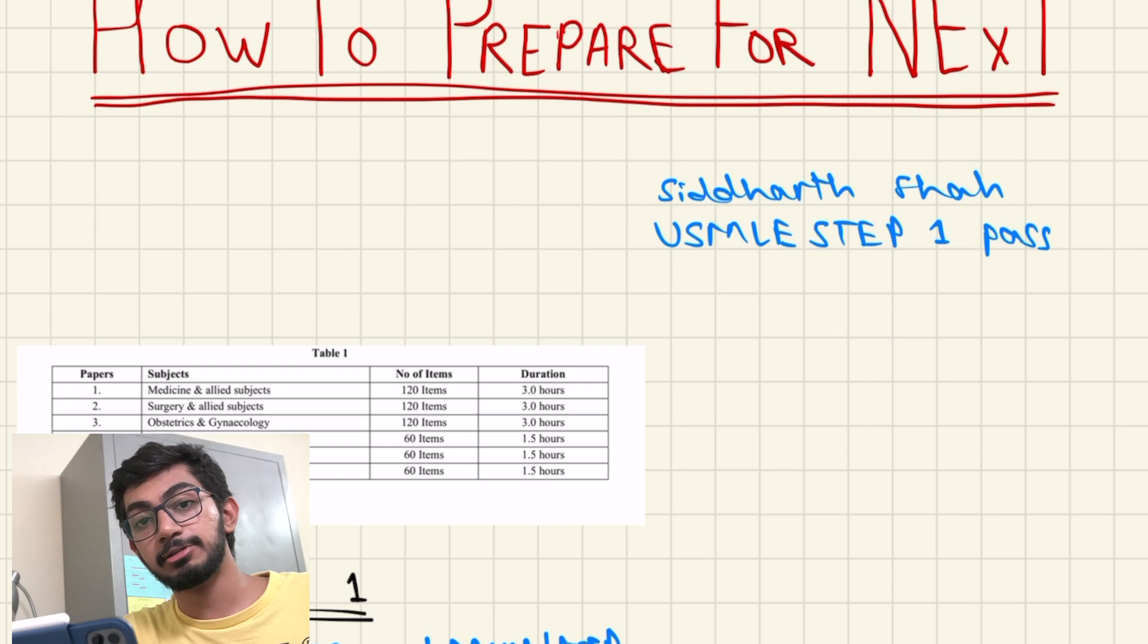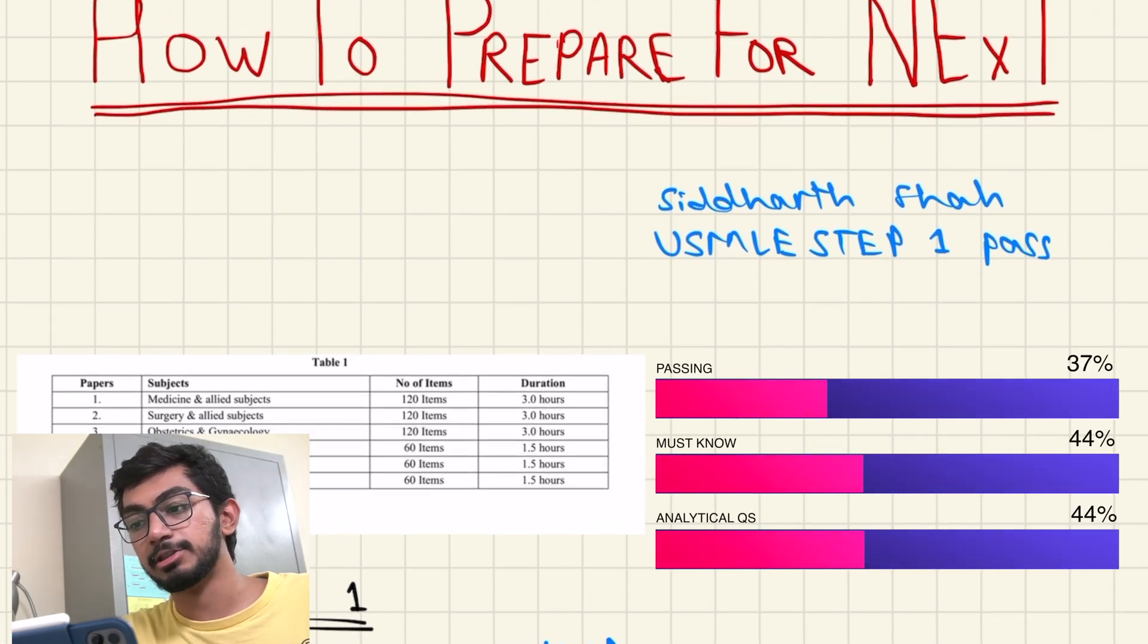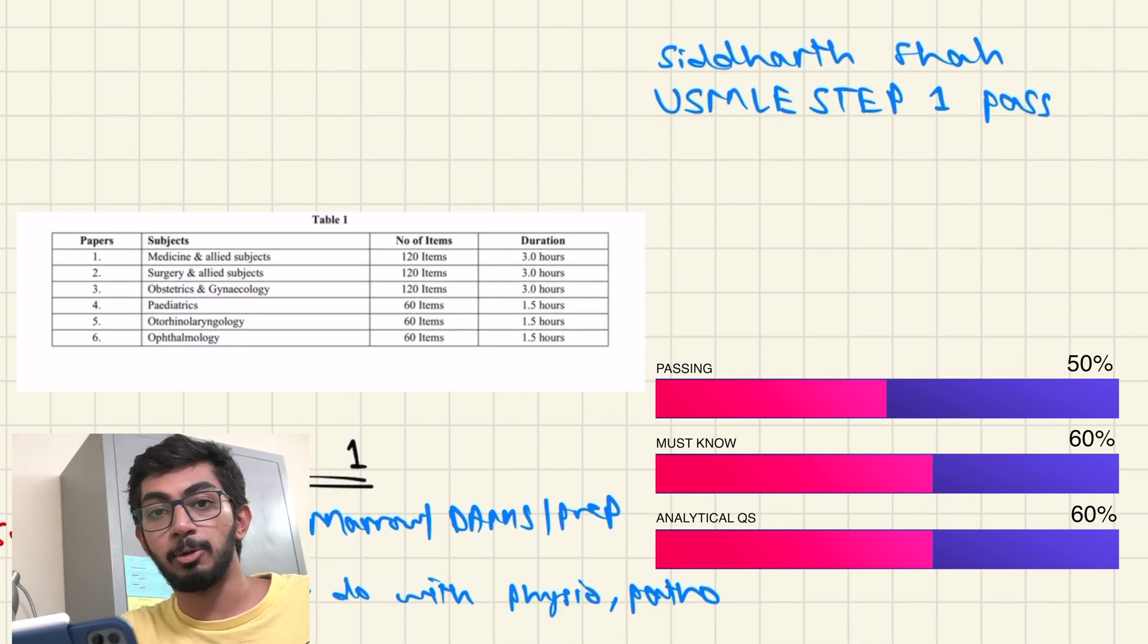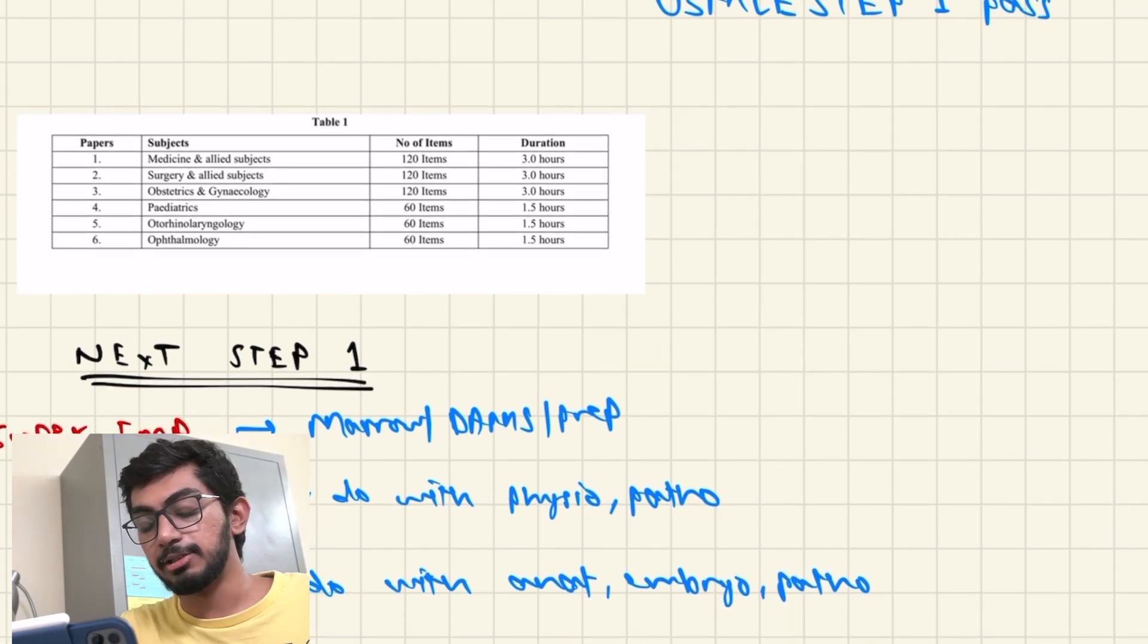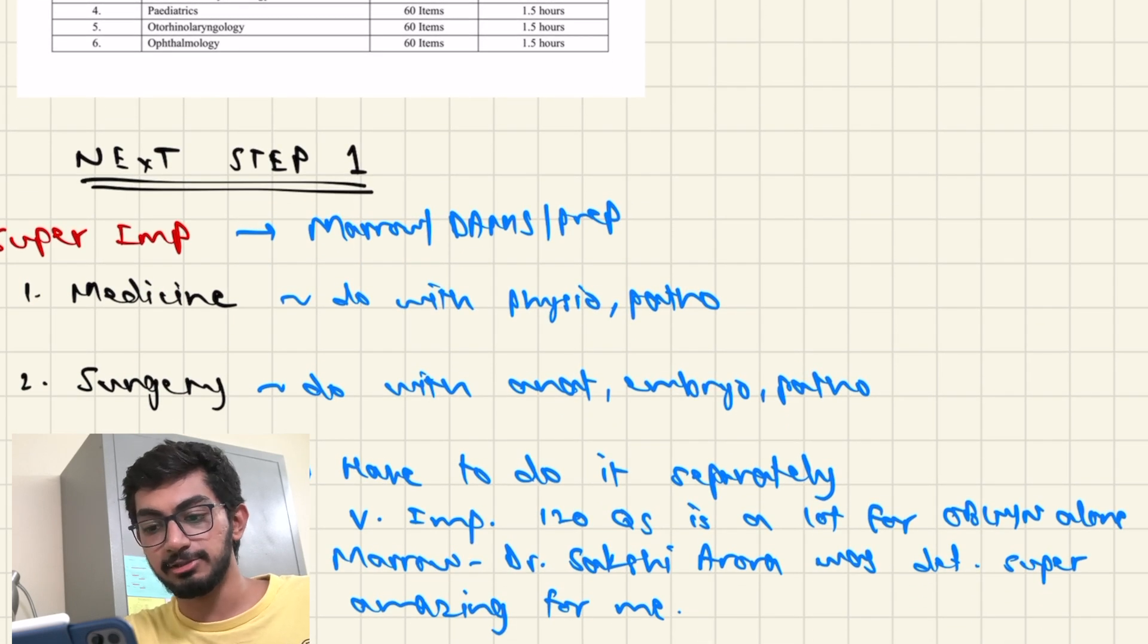In previous videos, I've already discussed about the next notification and the gazette that they had released which talks about all the topics that are included in the next Step 1 exam and also the distribution of the questions and what kind of questions are going to be asked. This is the same exact thing that is present in the next notification which is that Medicine, Surgery, OBGY will have 120 questions and Pediatric, ENT, Ophthalmology will have 60 questions each.